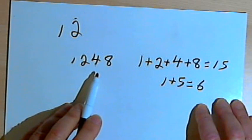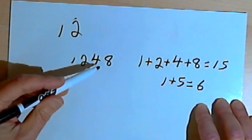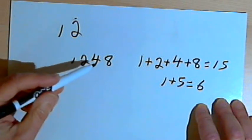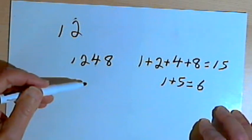So once again, the rule for 12 is make sure the number is divisible by 3 and make sure it's divisible by 4. If it's divisible by both of them, then the number is also divisible by 12.